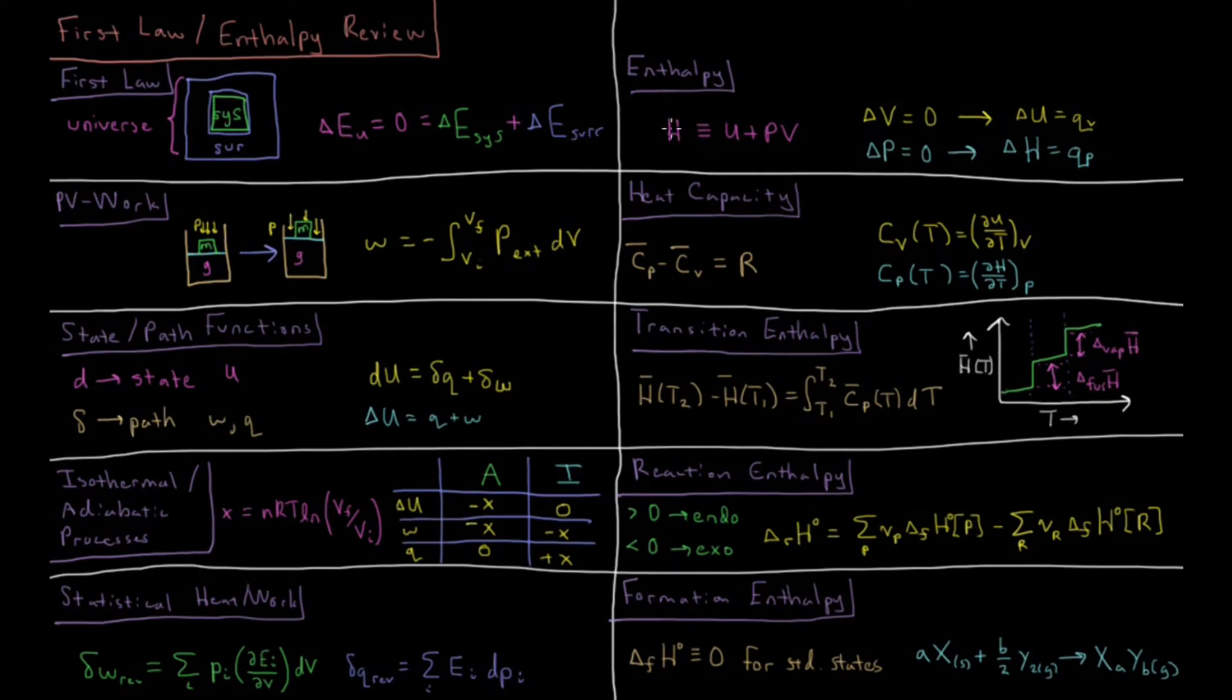We can then define enthalpy, which is defined as internal energy U plus pressure times volume. Whenever you have the change in volume for a process being zero, a constant volume process, the change in internal energy is equal to the heat during that constant volume process. But we want to know what the heat is during a constant pressure process. Due to the setup of how we define enthalpy, during a constant pressure process, enthalpy is equal to the heat the system absorbs during that process.